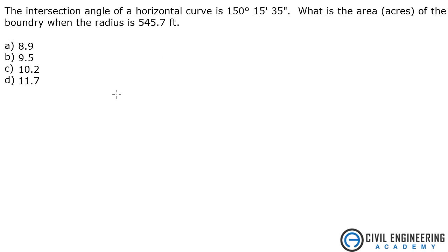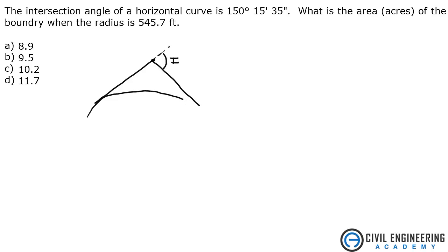So if we're looking at this, I am going to draw this out. Here is the intersection angle I. This is a horizontal curve. This is the intersected angle — 150 degrees, 15 minutes, 35 seconds, which if you calculate that, is the same as 150 degrees 0.2597.